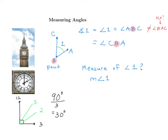If we take a 90-degree angle and split it into 3 equal parts, each of those parts is 30 degrees. So to go from 12 to 1 is 30 degrees; from 1 to 2 is also 30 degrees; and from 2 to 3 is 30 degrees as well. If we start at 12 and go to 2, that's 2 of those — a total of 60 degrees. So the measure of angle 1 is 60 degrees, corresponding to 2pm. Every hour corresponds to 30 degrees.